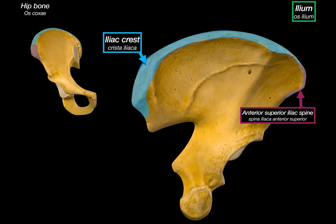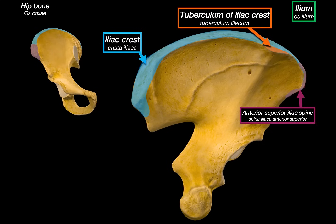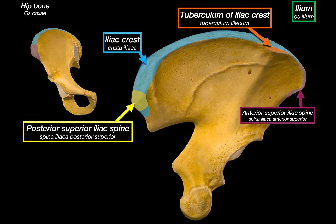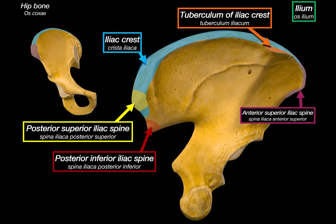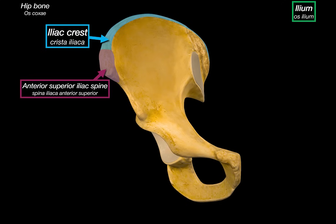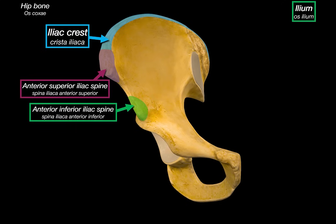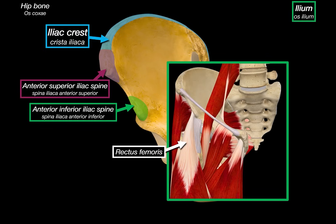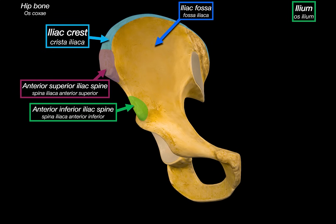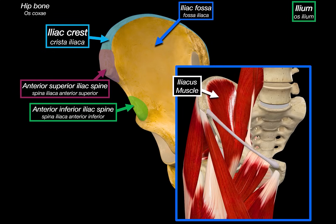Another structure along the crest is the tuberculum of the iliac crest — the thickest part, where the iliotibial tract attaches. Looking posteriorly, we can see the posterior superior iliac spine and, just below that, the posterior inferior iliac spine, both contributing to the posterior border of the auricular surface. Back on the anterior view, just below the anterior superior iliac spine is the anterior inferior iliac spine, which serves as the origin for the rectus femoris muscle and attachment site for parts of the iliofemoral ligament, a crucial stabilizer of the hip joint that resists hyperextension. Just medial to that is the iliac fossa, where the iliacus muscle originates, joining the psoas major further down to form the iliopsoas — the strongest hip flexor.